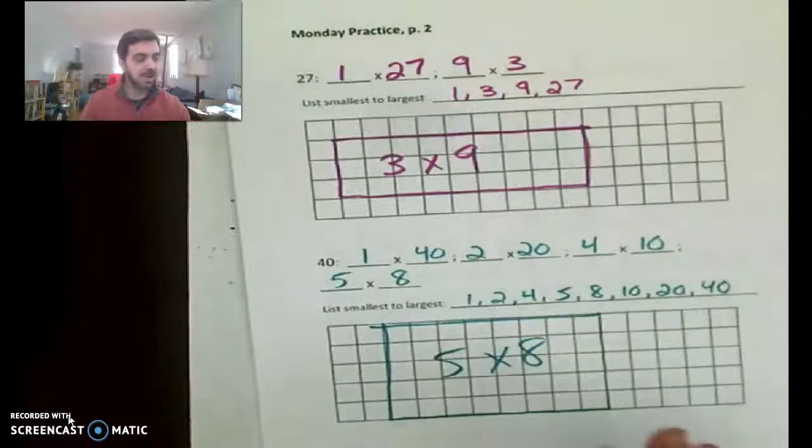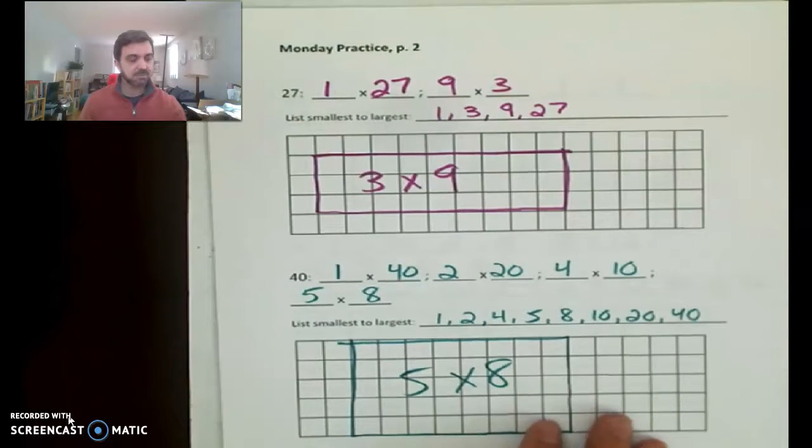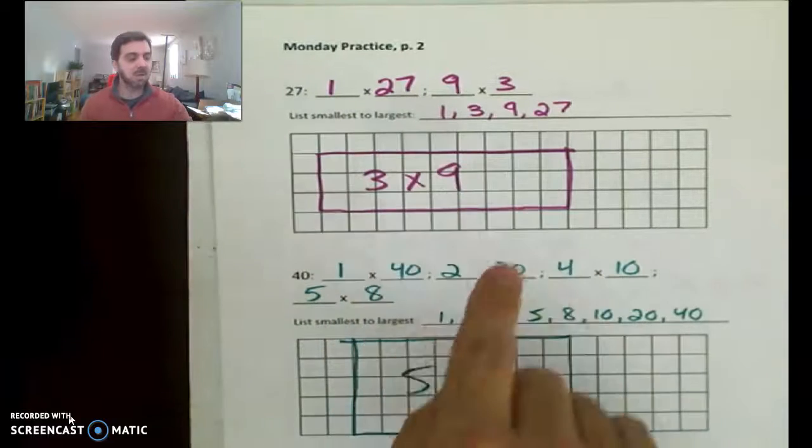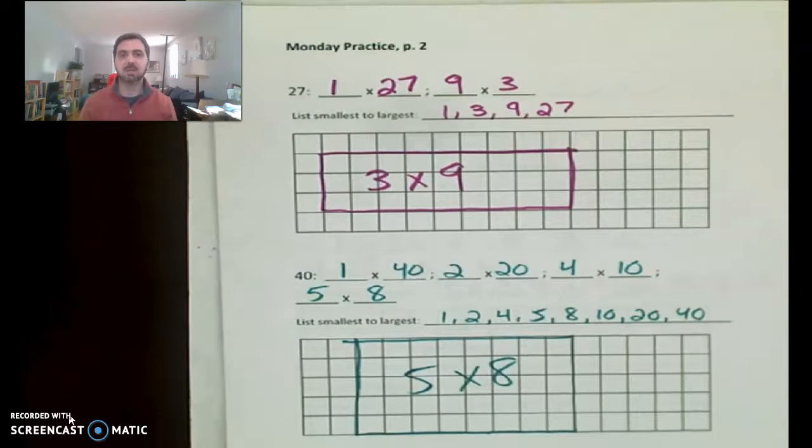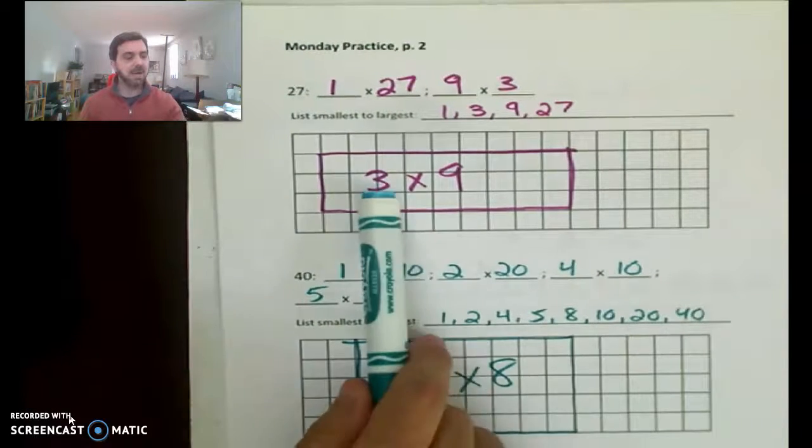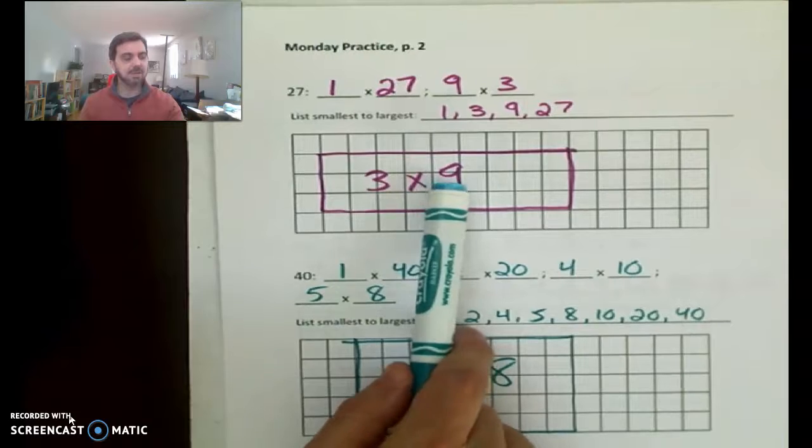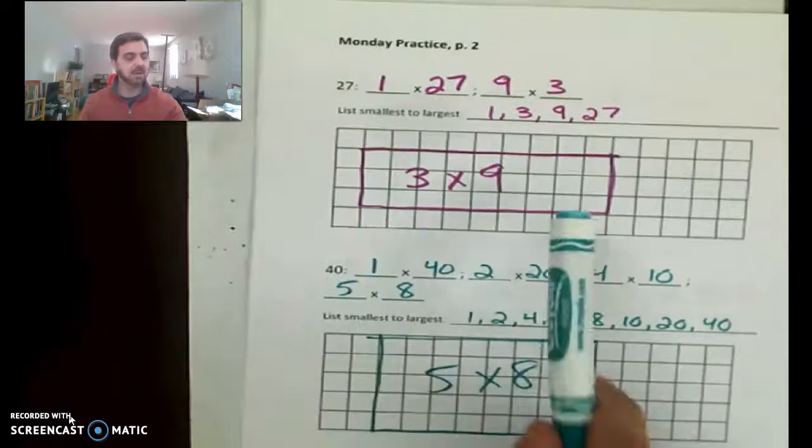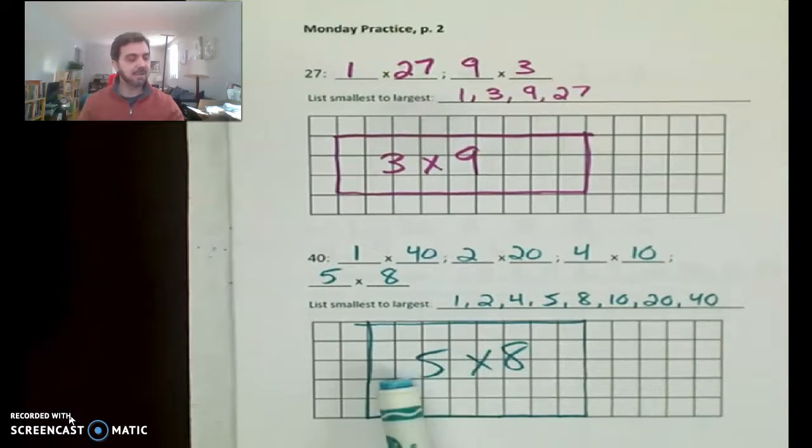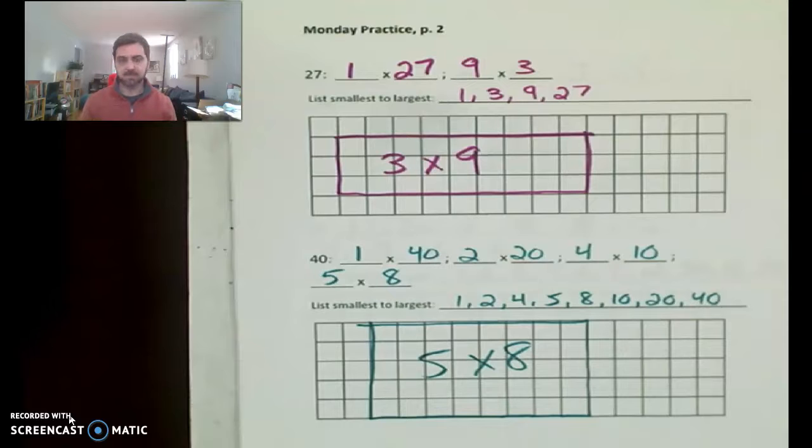Here are the answers to the next page. There was only two factor pairs for 27 and there were four factor pairs for 40. And I put them in order from smallest to largest, which is what you should have done. I did a three by nine rectangle for 27, three rows of nine. And I did five rows of eight for 40.